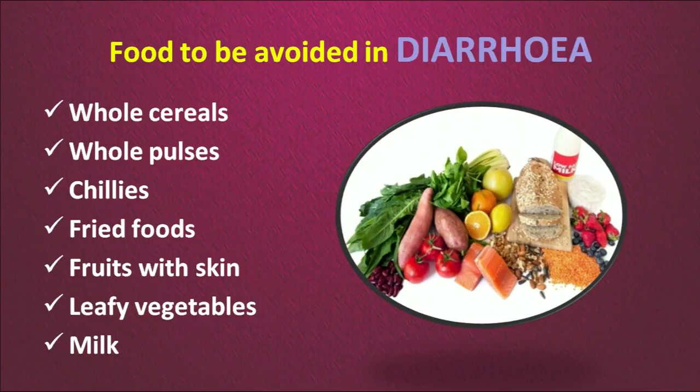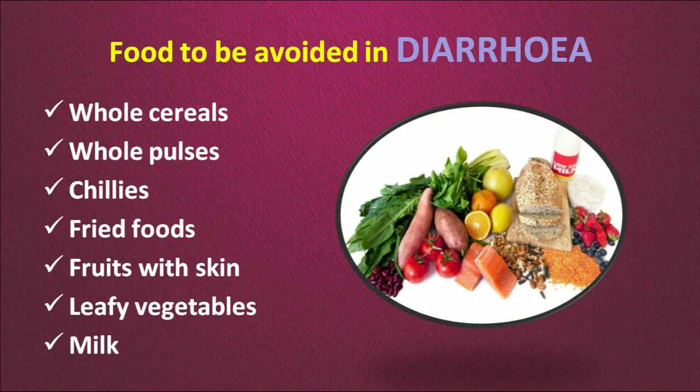Foods to be avoided in case of diarrhea are whole cereals such as wheat chapati, whole pulses like rajma and black gram, chilies, fried foods, and whole fruits with the skin. Banana should be eaten without skin, of course. Leafy vegetables and milk should also be avoided — curd is prescribed, not milk, during diarrhea.